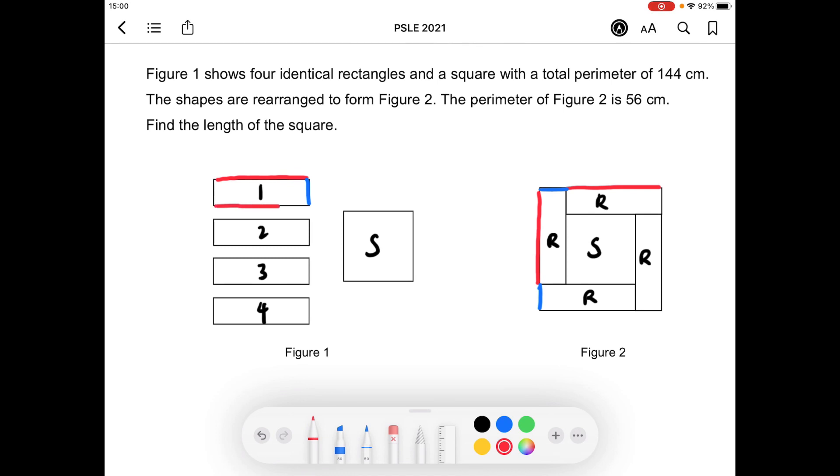There's another length here and breadth here. Likewise for here and here, and we have 2 more sets over here and here. Since the perimeter of Figure 2 is 56 centimeters, we can conclude that's also the perimeter of 2 rectangles.